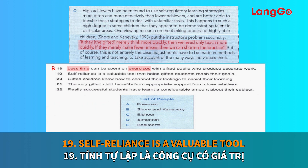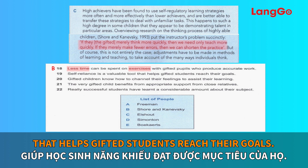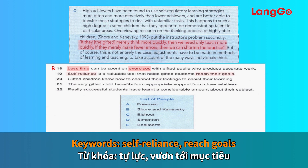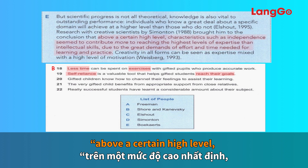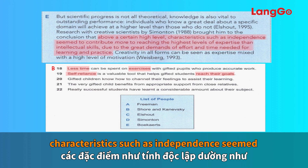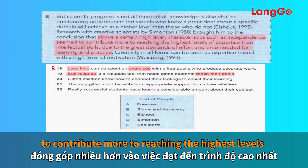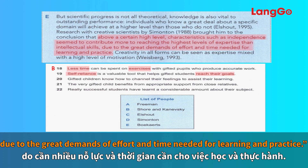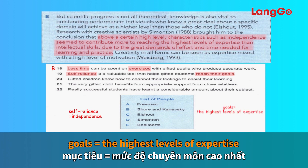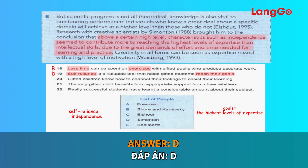Number 19: self-reliance is a valuable tool that helps gifted students reach their goals. Our keywords are self-reliance and reach goals. In paragraph E, Simonton summarises that above a certain high level, characteristics such as independence seem to contribute more to reaching the highest levels of expertise than intellectual skills, due to the great demands of effort and time needed for learning and practice. Self-reliance and independence mean the same thing, as do goals and the highest levels of expertise. Our answer here is D.